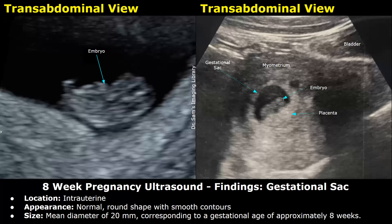Now we move on to the findings, starting with the gestational sac. The location is intrauterine. The appearance is normal: round shape with smooth contours. The mean sac diameter is 20 millimeters, corresponding to a gestational age of approximately eight weeks.